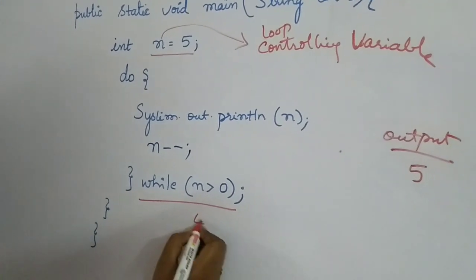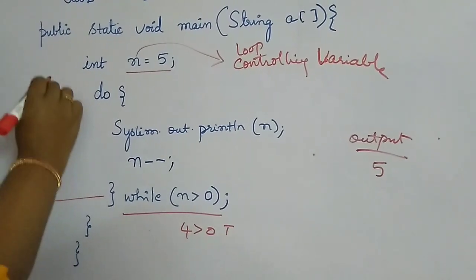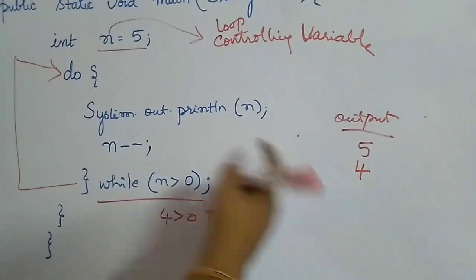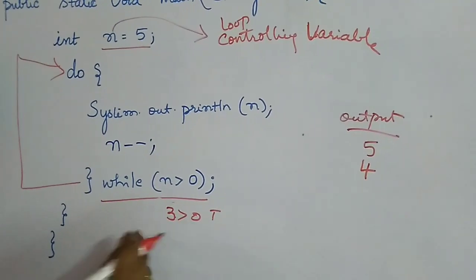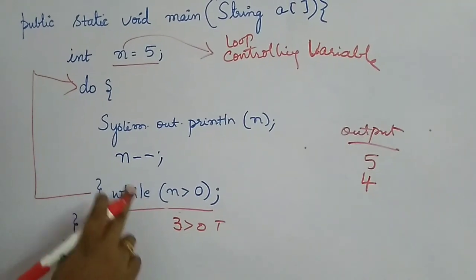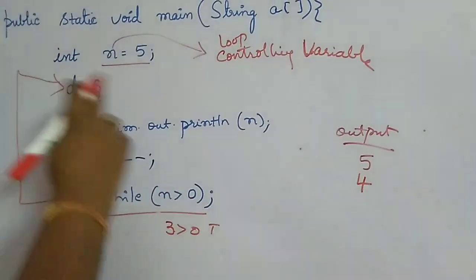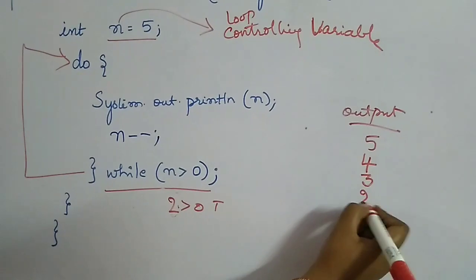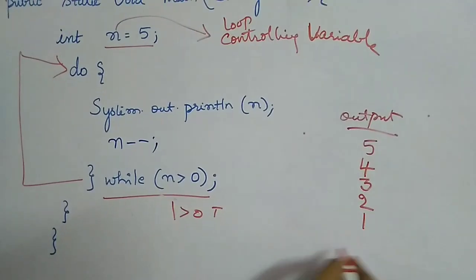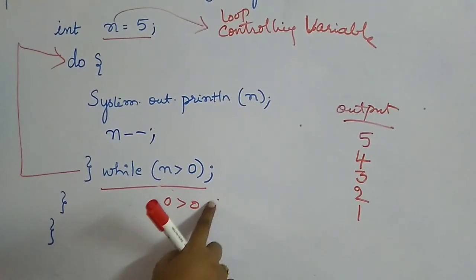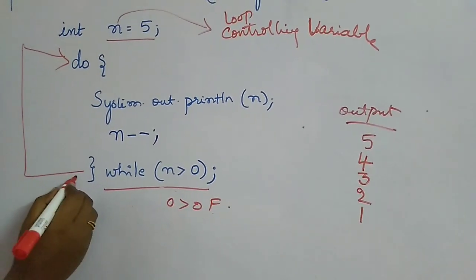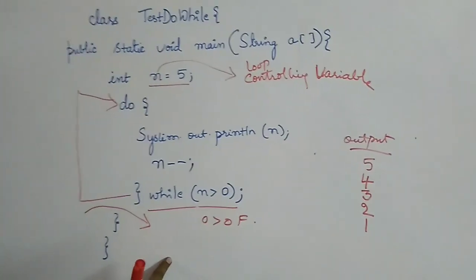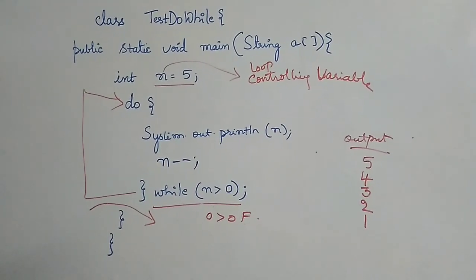After printing 5, n becomes 4 via n--. The while checks: is 4 greater than 0? True — so it prints 4, then n becomes 3, then 2, then 1. After printing 1, n becomes 0. Now 0 is greater than 0 is false, so the loop breaks and execution moves to the next statement after the while, and the program terminates.